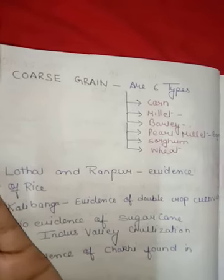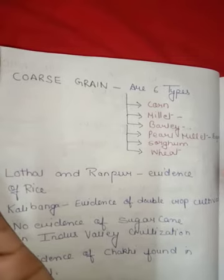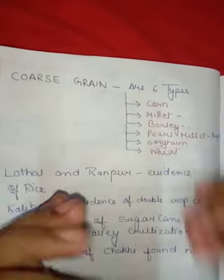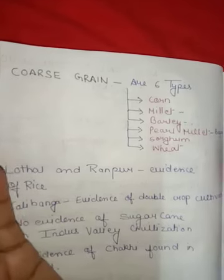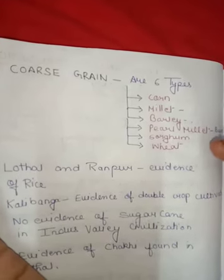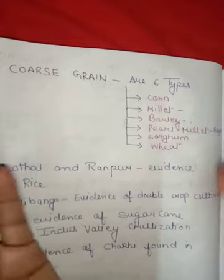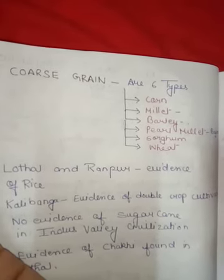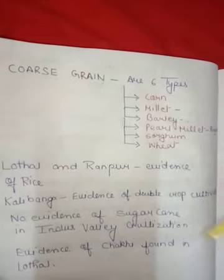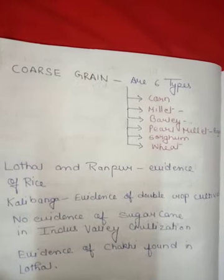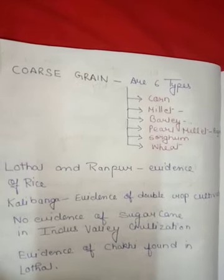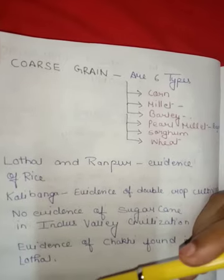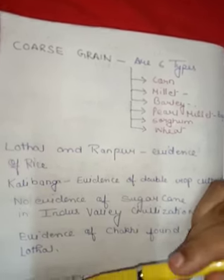These people were basically focused on wheat cultivation, although they were known to grow rice, but it was limited to Gujarat only — from the sites of Lothal and Rangapur. Now the second sector is industry.